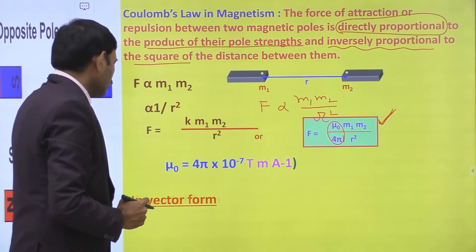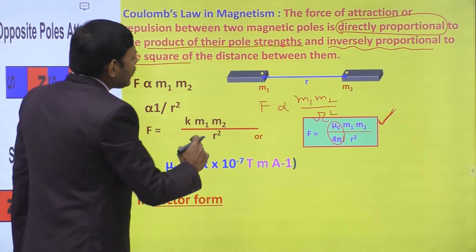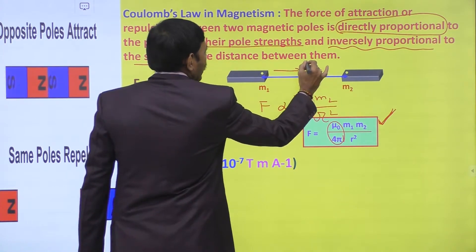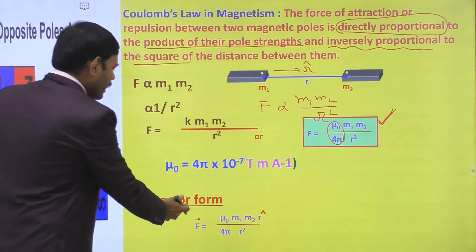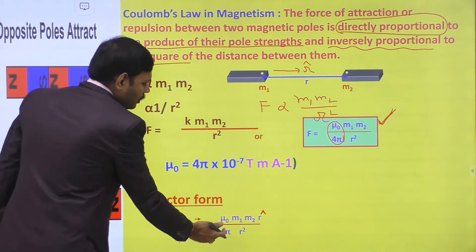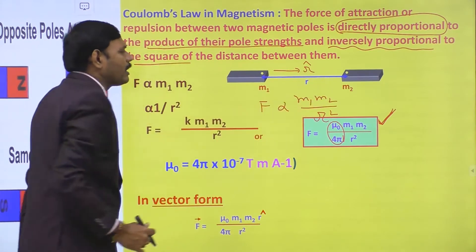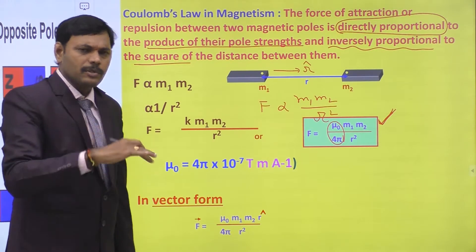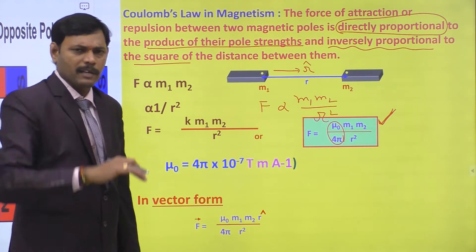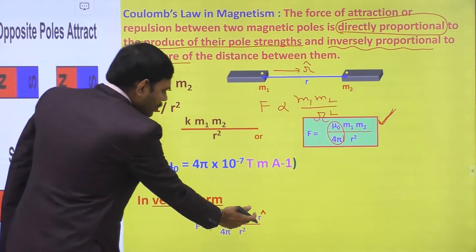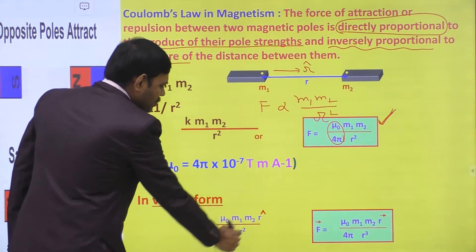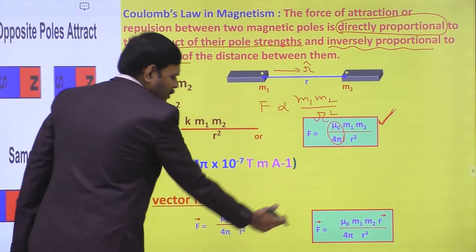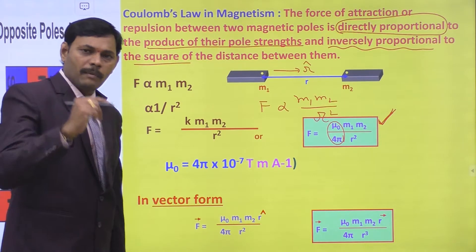In vector form, this force is along the line joining the two magnets. If we consider a unit vector R̂ along the line joining them, then in vector form: F⃗ = (μ₀/4π) · (M1·M2/R²) · R̂. Replacing R̂ = R⃗/|R|, it becomes F⃗ = μ₀·M1·M2·R⃗ / (4π·R³). These two expressions at the bottom of the screen show the vector form of the equation.